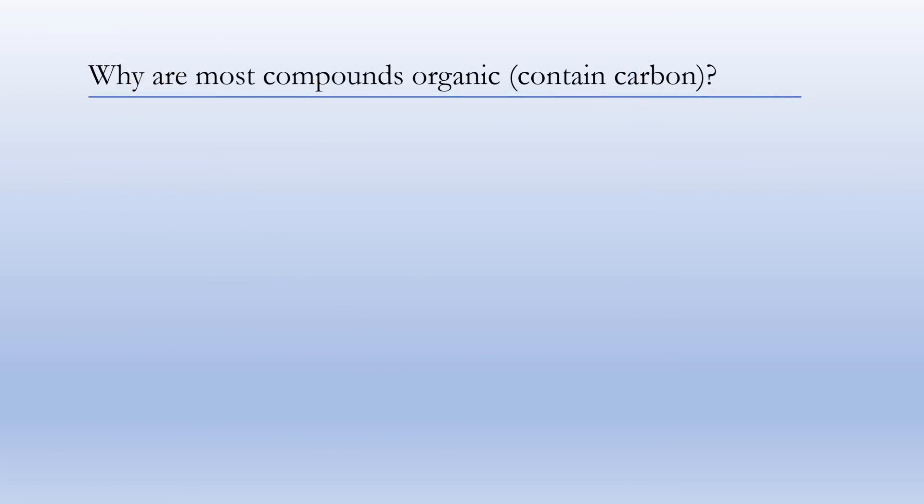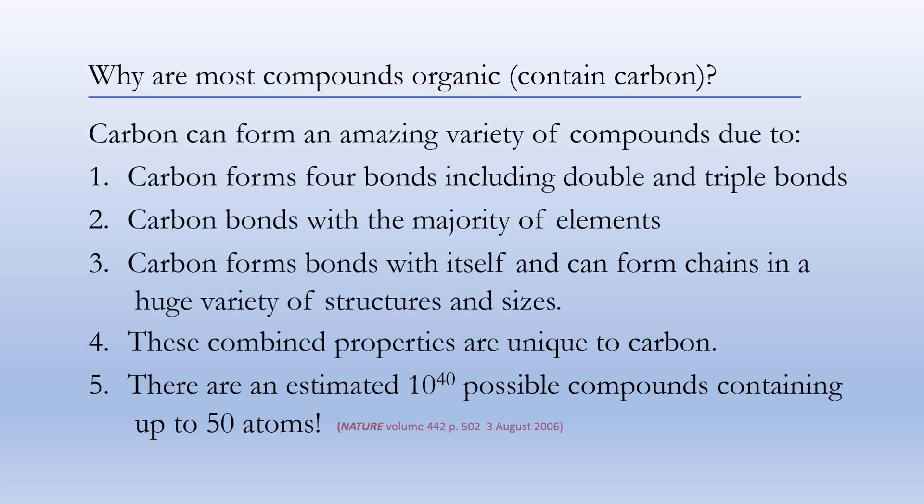So why are most compounds organic? Carbon can form an amazing variety of compounds due to forming four bonds, including double and triple bonds, bonding to both itself and many other elements, forming chains in a huge variety of structures. These properties are unique to carbon, and there are an estimated 10 to the 40th possible compounds containing up to only 50 atoms — just think of how large that number grows with more than 50 atoms.